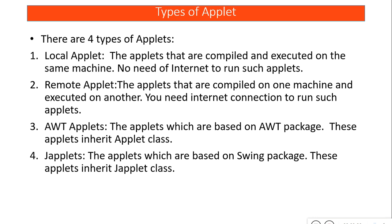Applets can be categorized into four types. Local applets are applets executed and compiled on the same machine — for example when you want to test your application locally instead of buying a domain. Like in PHP we use XAMPP or localhost, similarly local applets are tested on your own machine. Once tested, you can upload to your server and it becomes a remote applet. To view a local applet you do not need an internet connection; to view a remote applet you do.